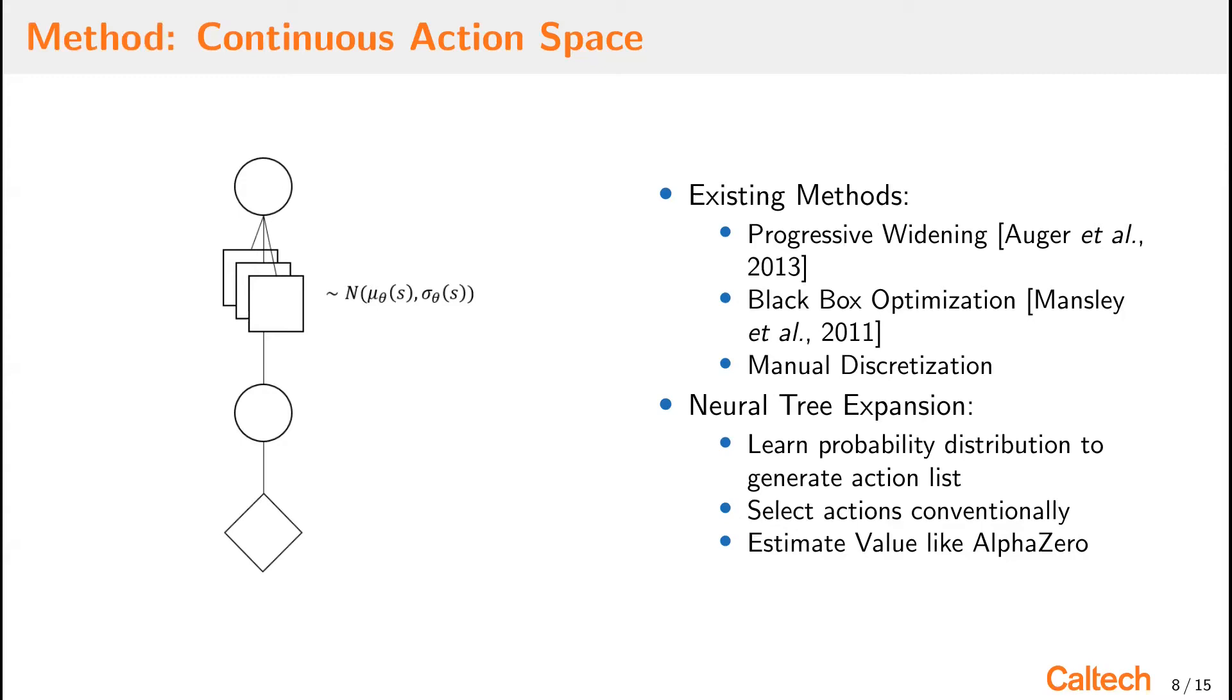We also explored other variations, such as general probability distributions using conditional variational autoencoders, but we found that using a normal distribution had a good computational complexity and performance trade-off.